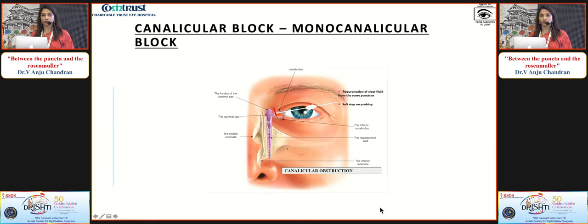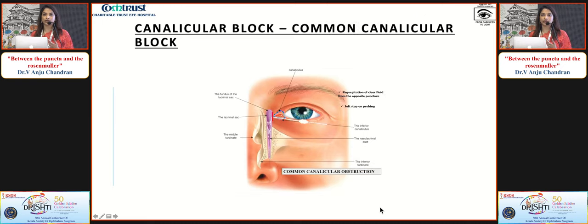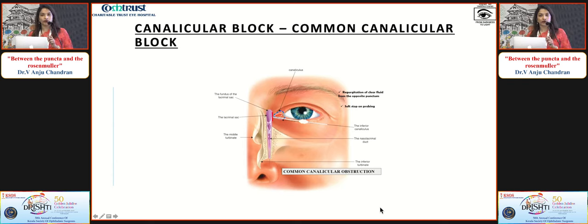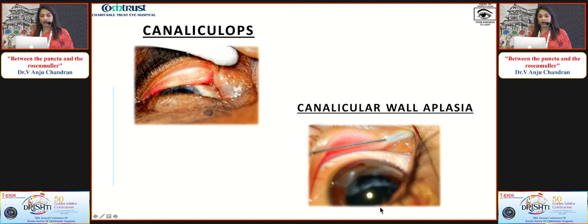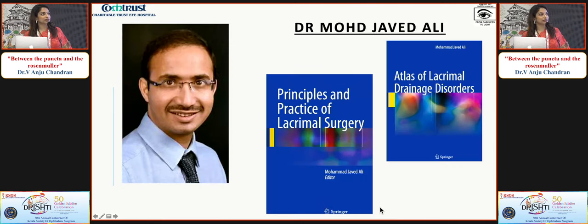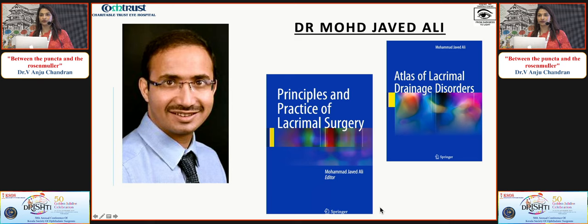Canalicular blocks present with regurgitation of clear fluid from the same punctum, and need not be addressed unless there is an associated NLD obstruction. Common canalicular block presents with regurgitation of clear fluid on syringing - always do probing to confirm whether it is an NLD obstruction or common canalicular block; in common canalicular block you get a soft stop. Other rare conditions include canaliculops and canalicular voileplasia. I cannot end an IC on Dacryology without mentioning Dr. Mohamed Javed Ali, who has contributed enormously to Dacryology, with his textbooks highly recommended for those with special interest in the field. Thank you.